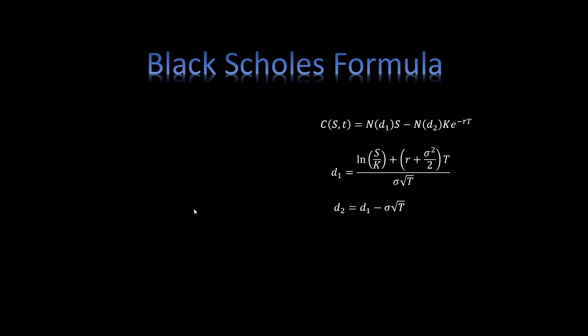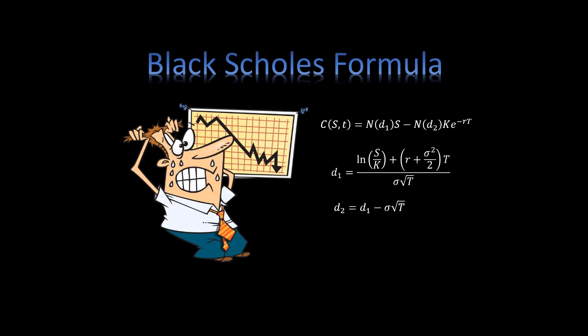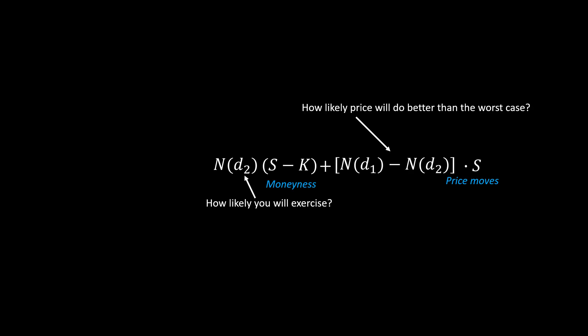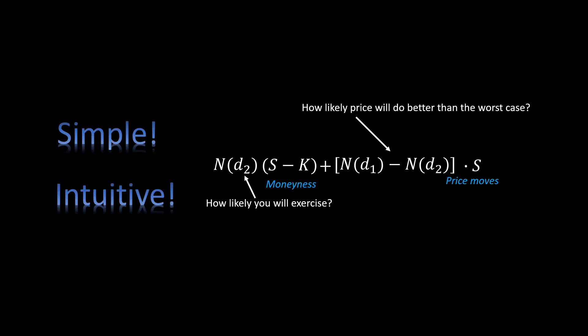In this video, I will share a very simple way to understand the Black-Scholes formula. It will be the simplest and most intuitive explanation you've ever seen. Say we have a call option, giving me the option to buy Tesla stock at $175 two months later. How much is this option worth?